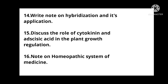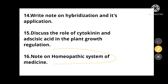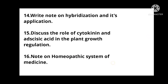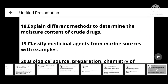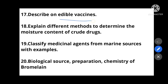Write a note on hybridization and its applications. Discuss the role of cytokinin and abscisic acid in plant growth regulation. Write a note on the homeopathic system of medicine — from Ayurvedic, Unani, and Homeopathic, one will be fixed. Describe edible vaccines — what are edible vaccines and some description on them. Explain different methods to determine the moisture content of crude drugs — which methods are used to determine the percentage of moisture content present.